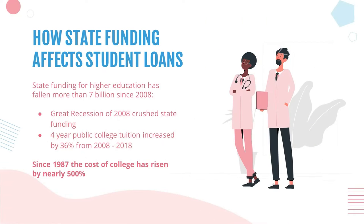This brings us to the Great Recession of 2008. State funding for higher education has fallen more than $7 billion since 2008, and with everything that happened, state funding was further crushed. Because of this, four-year public college tuition increased by 36% from 2008 to 2018. And even bigger — since 1987, the cost of college has risen by nearly 500%. Just some insane numbers.